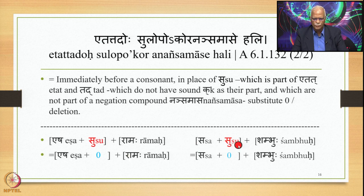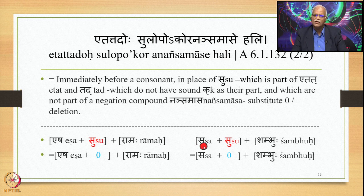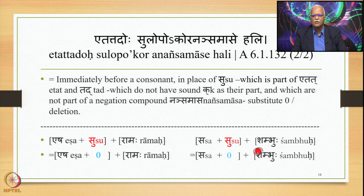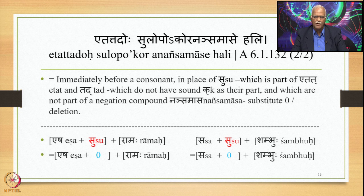Similarly, Sa plus Su plus Shambhu: this Su comes immediately after Sa, which is part of Tad. This is not a Nai Samasa and there is no Ka anywhere here. So Su gets deleted by this Sutra, and the finally derived output is Sa Shambhu. In both Esharamaha and Sa Shambhu, Etat and Tat do not have Ka as their part and are not part of the negative compound, so Su takes the form of zero or deletion.